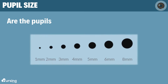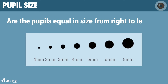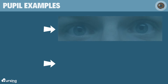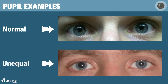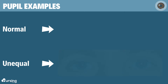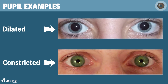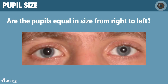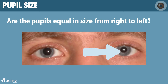The first thing we look at is whether the two pupils are equal right to left. Here are a few examples of normal, unequal, dilated, and constricted pupils. When we look at whether or not they're equal right to left, you can see here this one is much larger than this one — the patient's right pupil is larger than the patient's left pupil.